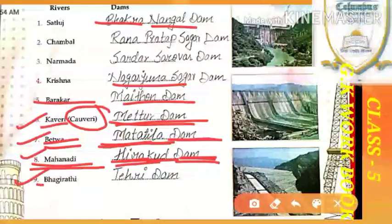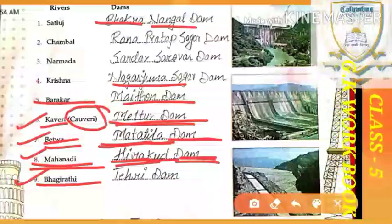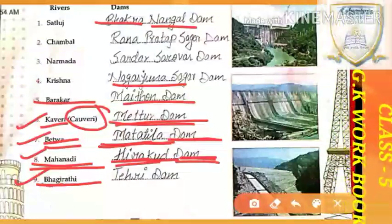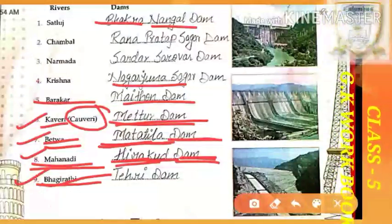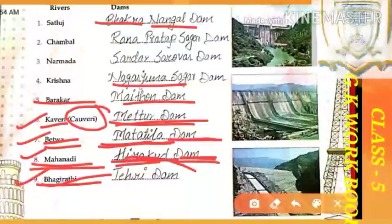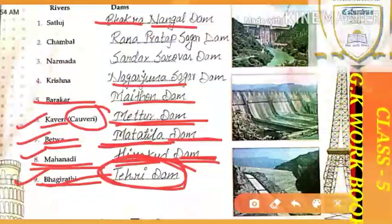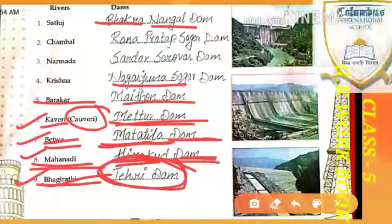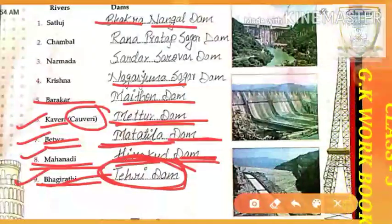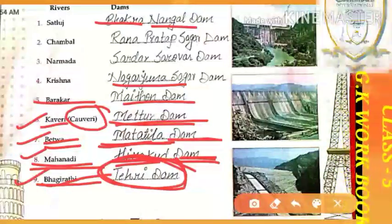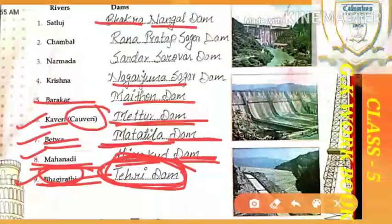And the last one is Bhagirathi river. Bhagirathi river. And the dam name for this river is Tehri Dam. Tehri Dam. Which dam is built on Bhagirathi river? Tehri Dam. Okay?